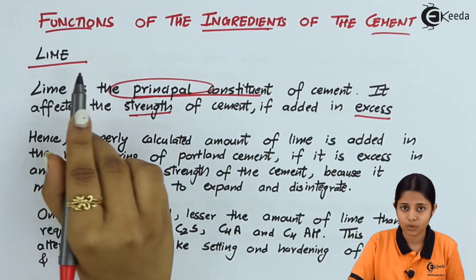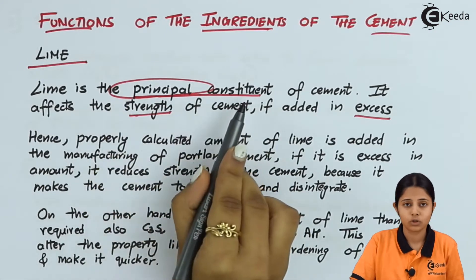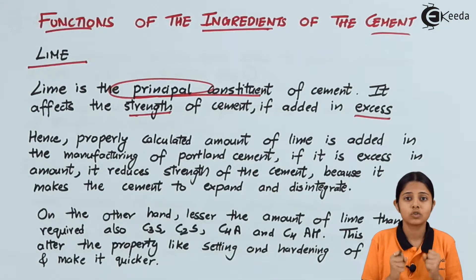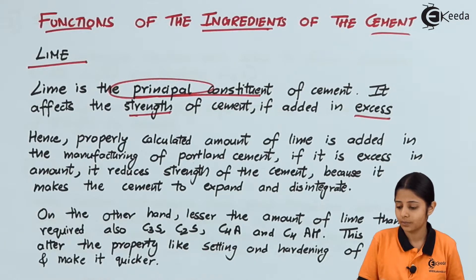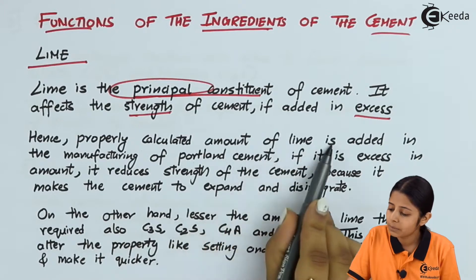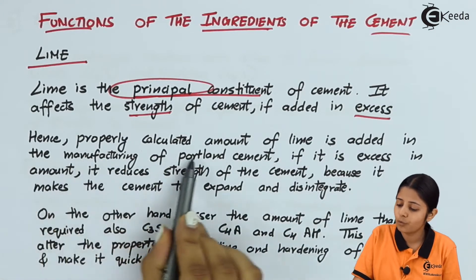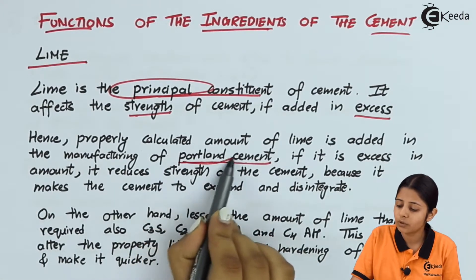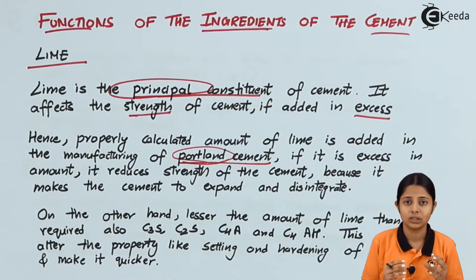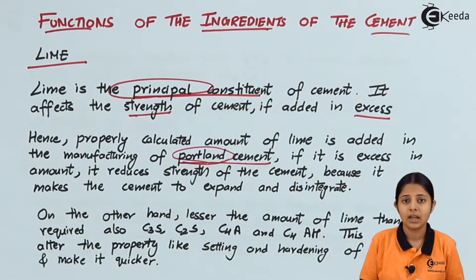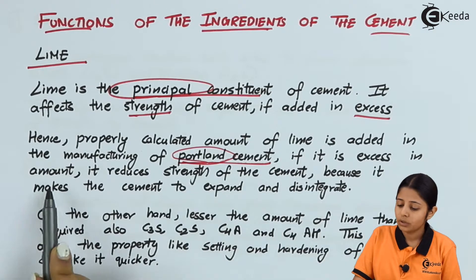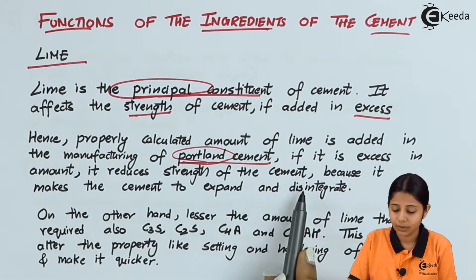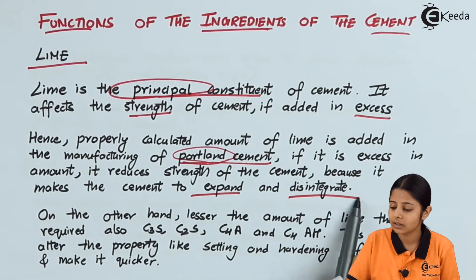Lime is the principal constituent of cement and gives great strength to it, but Lime must be used in the proportion prescribed. A properly calculated amount of Lime is added in the manufacturing of Portland cement, which is one of the most commonly used cements. It has the highest utility because it has good setting as well as hardening properties. If Lime is in excess, it reduces the strength of cement because it makes the cement expand and disintegrate.